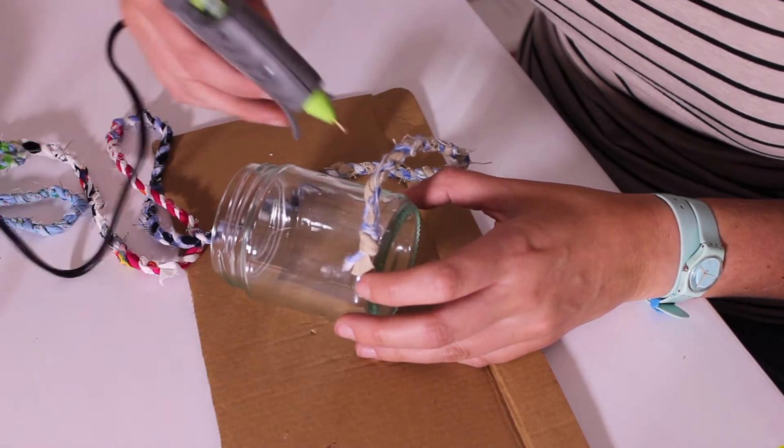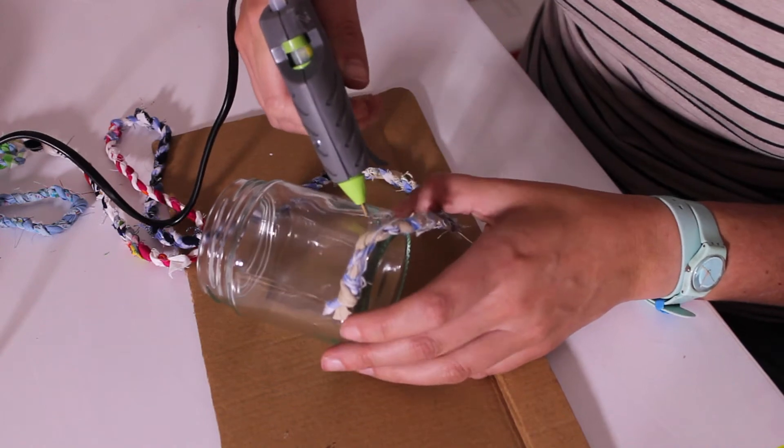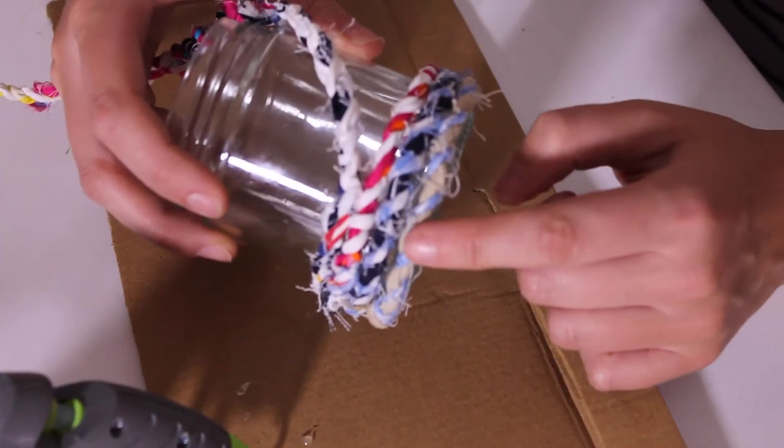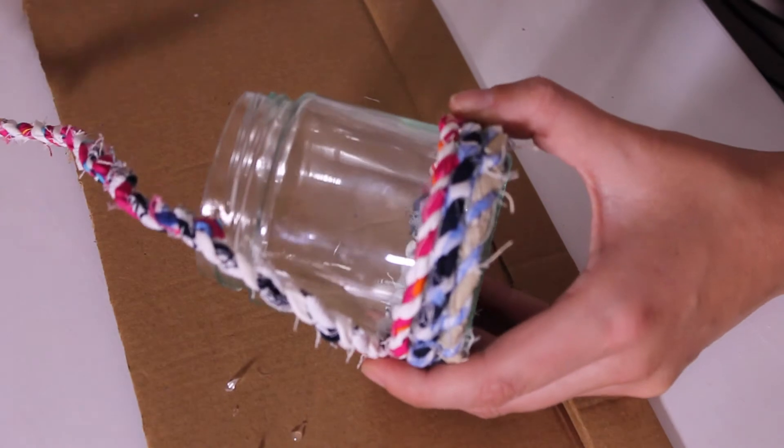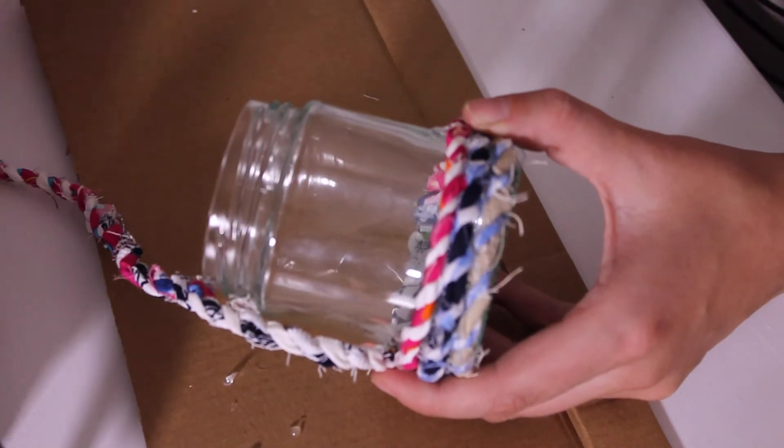And then you're going to keep adding glue and just wrap it all the way around. Once you've wrapped around three times, you don't have to put that much glue on it anymore. Just every turn you put a bit of glue.